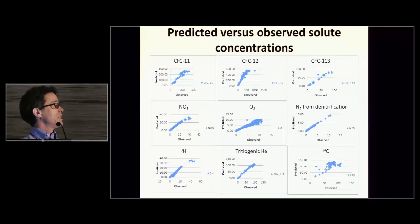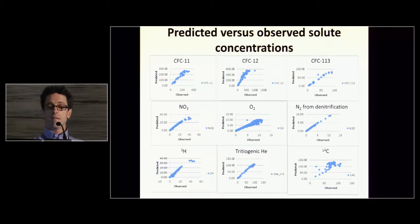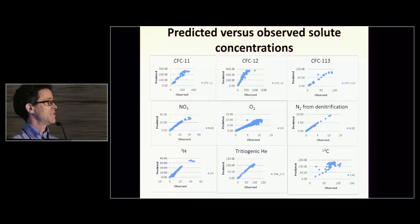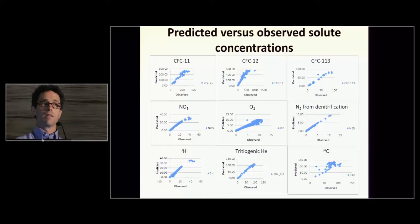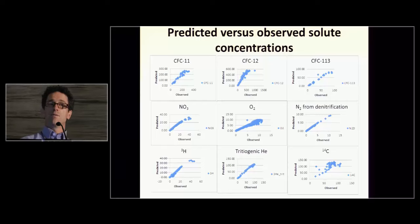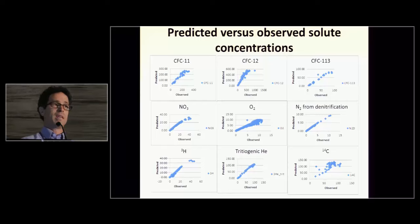These are our preliminary results for predicted versus observed solute concentrations. On the top are CFCs; in the middle, we have nitrate, oxygen, and excess N2 from denitrification; then tritium, tritiogenic helium, and carbon-14. In general, we're getting fairly close matches between the model and the data. This raises the concern about overfitting, so we need to do some work to see if what we're estimating in terms of parameters at least makes sense.